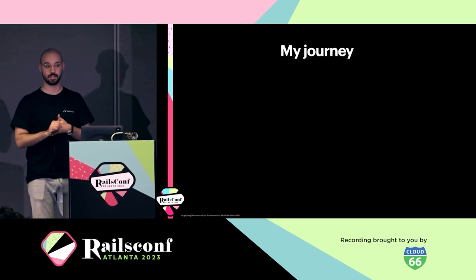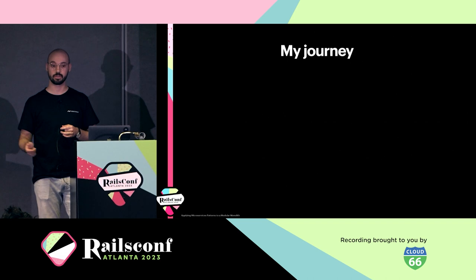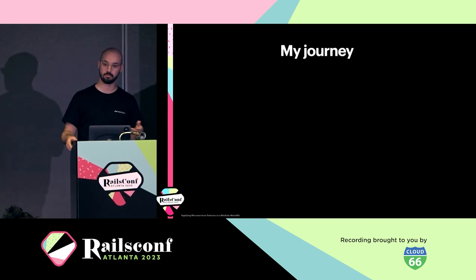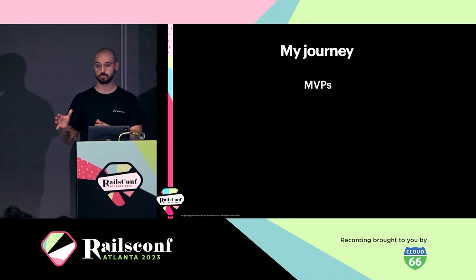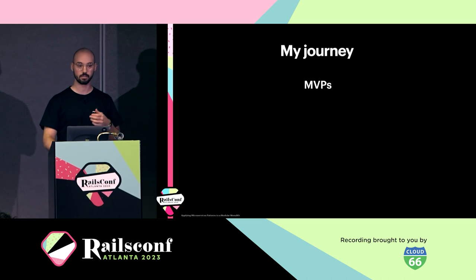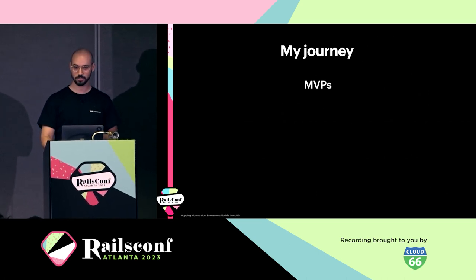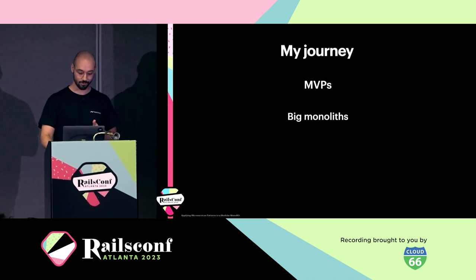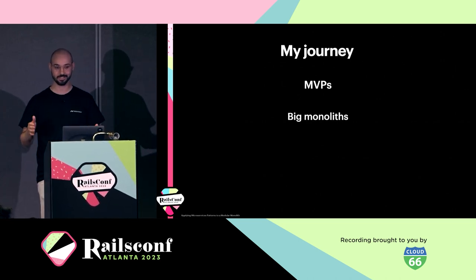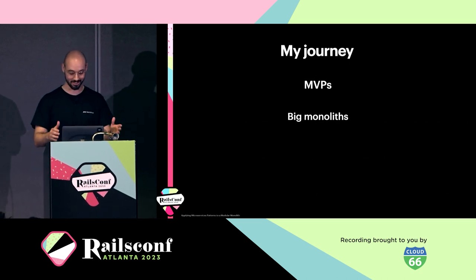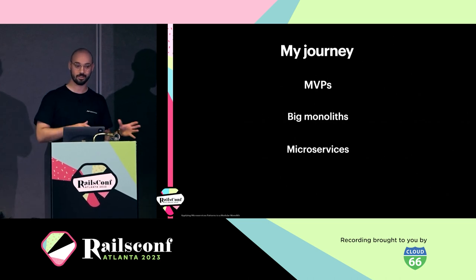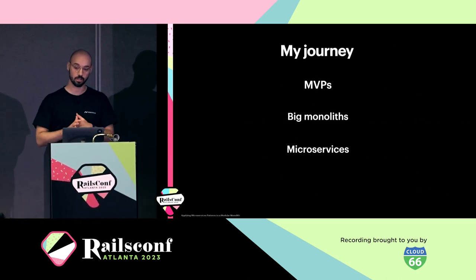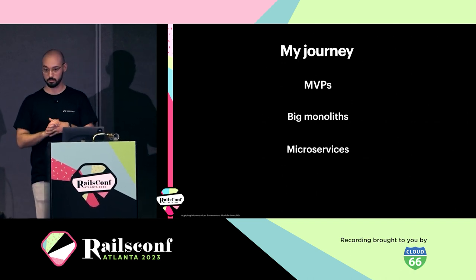My journey started six years ago. I started learning Rails and working with simple projects, simple MVPs, that kind of thing. Then I got moved to bigger projects, and with those came different challenges and constraints. I'll show an example of what I faced with big monoliths. Then I got moved into a microservice project — kind of bouncing around different architectures. In the project I'm working on right now, we're using a monolith with modularization.